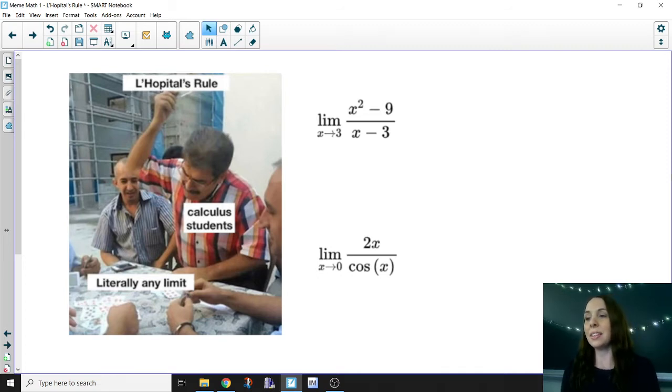Take a look at the limit at the top. We have the limit as x approaches 3 of (x² - 9)/(x - 3). This is a place where you can absolutely apply L'Hopital's Rule and get the answer to this limit very easily. Here's why.